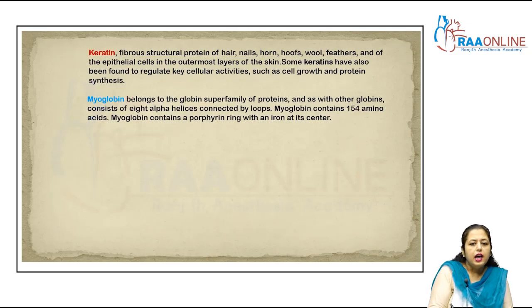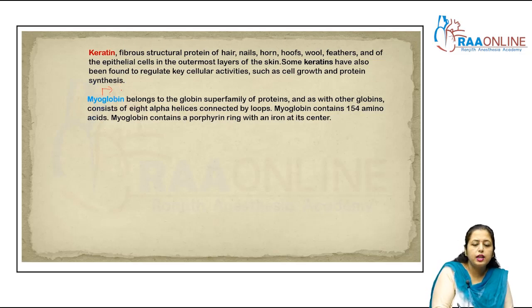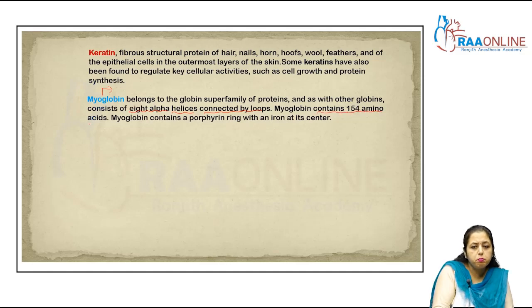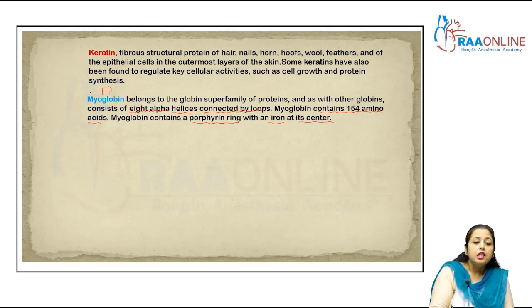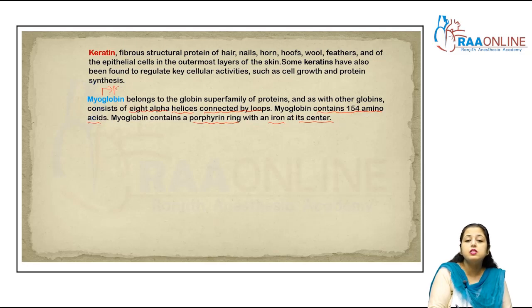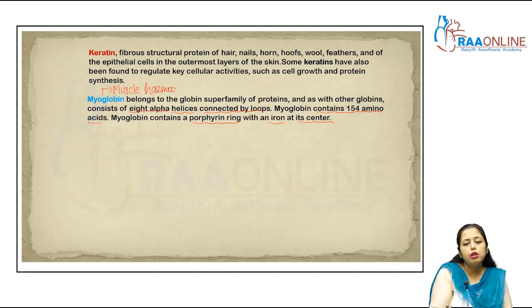Myoglobin is essentially the muscle hemoglobin, responsible for the pinkish tinge of muscles. In muscles, myoglobin reserves oxygen and can carry oxygen as a reserve molecule. Keratin, as previously discussed, is the fibrous structural protein of hairs, nails, horns, hooves, feathers, and wool, and of the epithelial cells in the outermost layer of skin. Some keratins also regulate key cellular activities such as cell growth and protein synthesis.